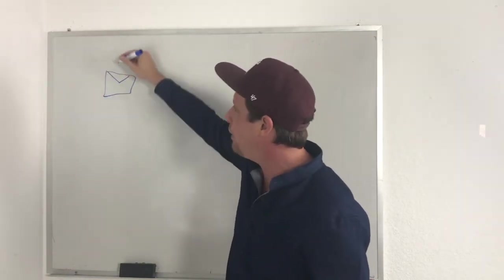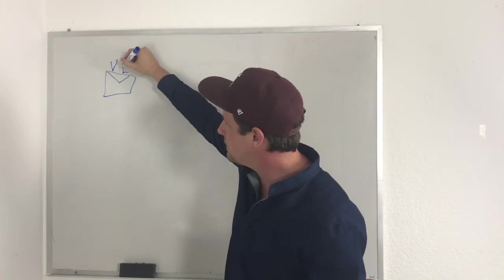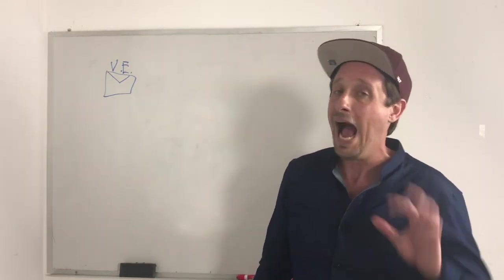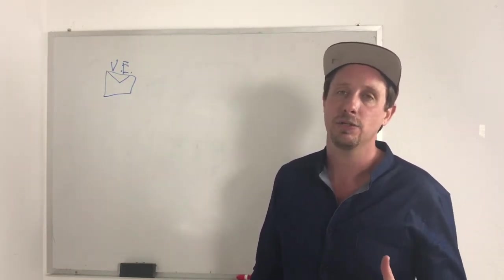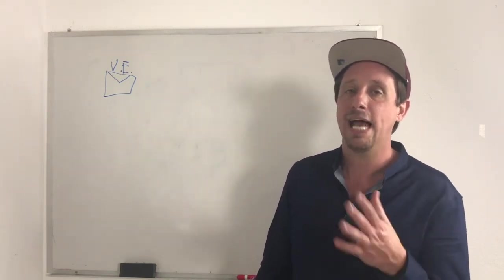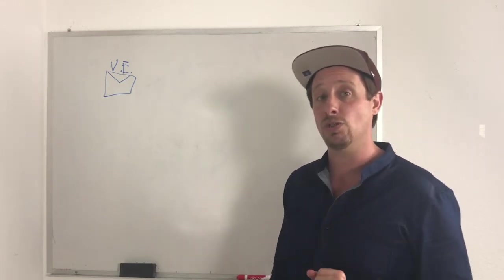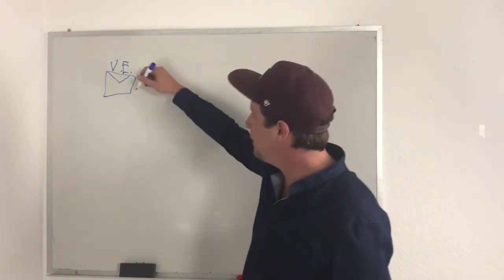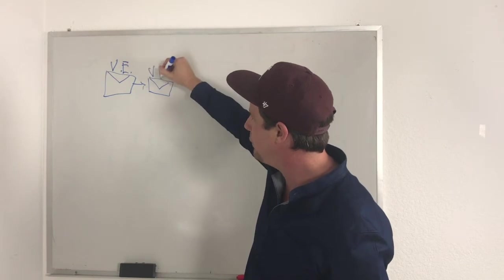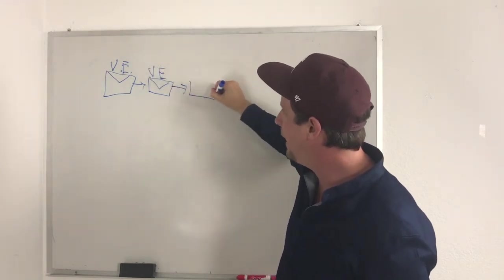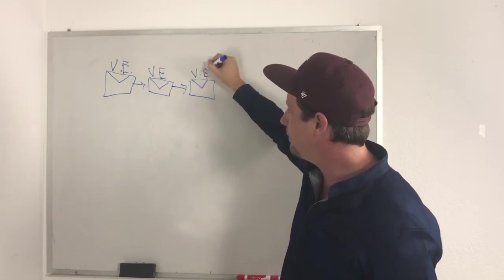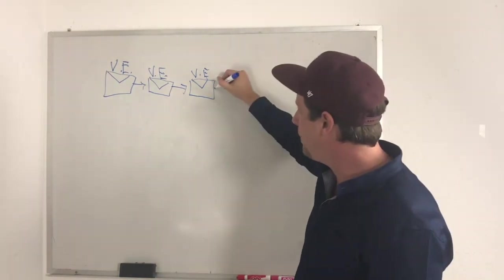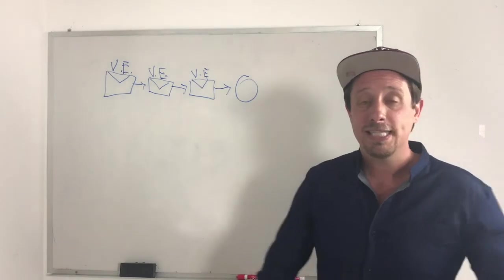You are going to send some type of value email to your community. Now you might say I don't have a list, I don't have anybody to send anything to. If that's the case, then what I recommend is that you do this on social media. This same process can be mirrored on social media. But assuming you do have a community, you're going to send one value email followed by a second value email followed by a third value email. Three values: give, give, give, followed by an offer. That's the overall structure.